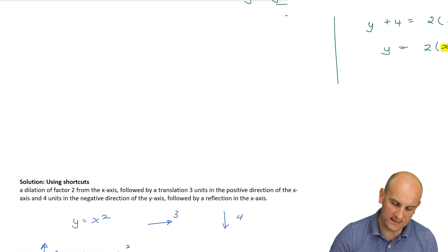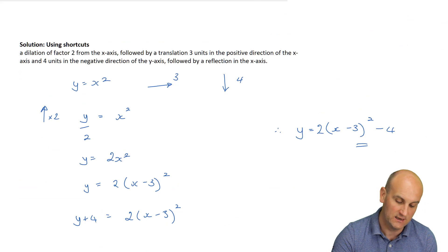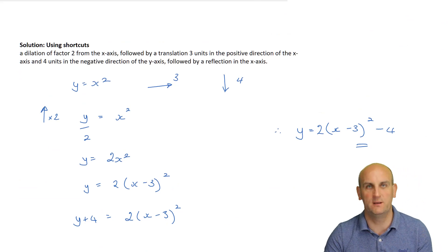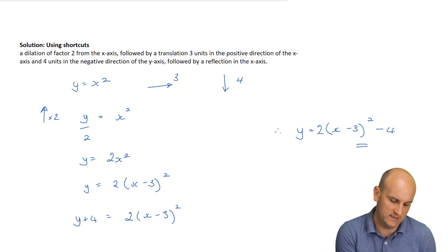Is that what I got before? Did I get 2 lots of x minus 3 all squared minus 4? I did. Now, the shortcuts are great if you remember them. Over here in Australia, you're allowed to use summary books, but in one of your exams. The other one, you're just going to have to remember it, which makes summary books a bit of a waste of time, really, in my own personal opinion. But anyway, so there we go. That was using shortcuts.